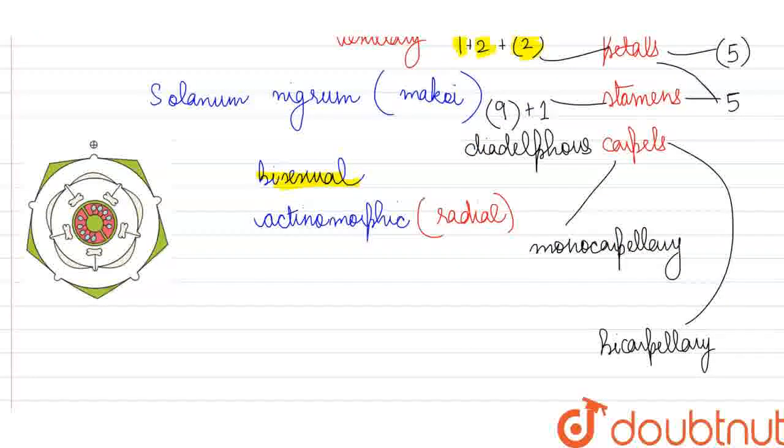Similarly, when we see the floral diagram of our potato family, of the makkoi plant, we see our calyx and corolla. We see how there are five stamens and how they have been joined to the petals, epipetalous condition. And also here, we can see the bicarpillary condition of our ovary.